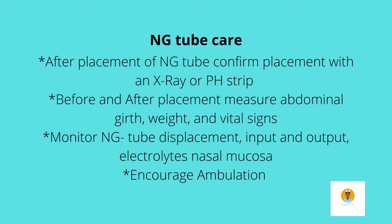When assessing a patient with an NG tube, we always measure the abdominal girth. Every time you do a patient assessment, measure the abdominal girth — if the abdomen continues to distend, the NG tube is not doing its job. We listen to bowel sounds, monitor the NG tube for placement, and check the nasal mucosa for breakdown since the tube passes through the nasal passage. If the patient has an NG tube for a longer duration, we switch it to the other nostril to prevent skin breakdown.